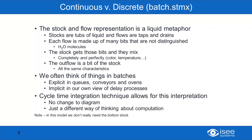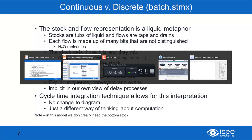When we think about things — regardless of how we're modeling — we think about them in batches. We make that explicit in queues, ovens, and conveyors, where anything that comes in is a batch of material that needs to be processed as a batch. It tends to be implicit in the way we view delay processes, where something comes in, stuff happens to it for a while, and then it comes out the other end. The cycle time integration technique allows that batchy interpretation without making any changes to the diagram — it's really just a different way of thinking about computation.